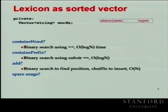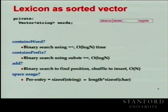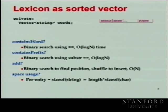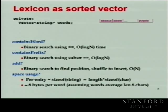Looking at space usage: the sorted vector stores essentially the string data itself — if words average about eight characters, that's about eight bytes per word. For 100,000 words, we'd expect roughly 800,000 bytes in this arrangement. That gives us a good starting point to compare against alternatives.